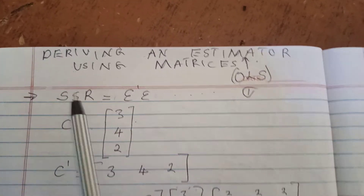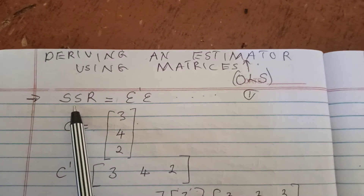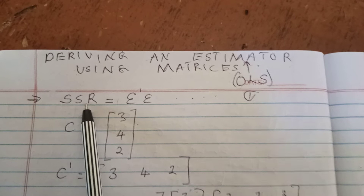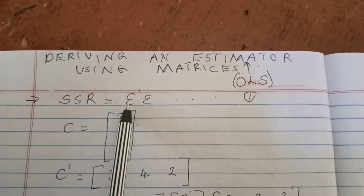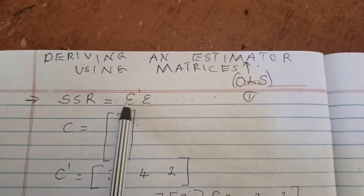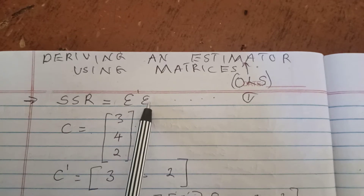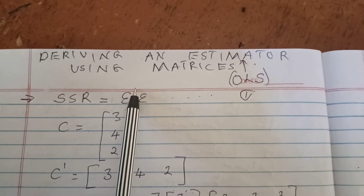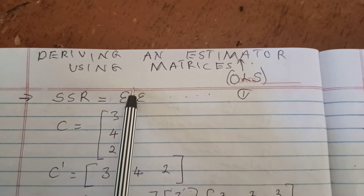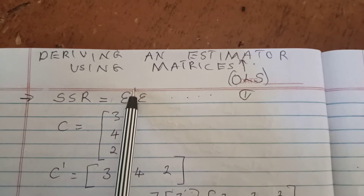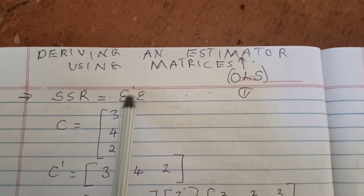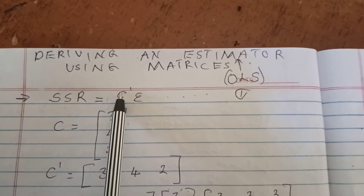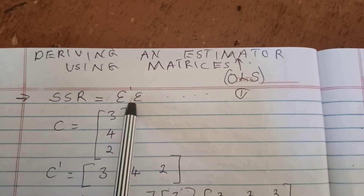The first thing you need is your SSR — SSR stands for Sum of Squared Residuals. This is equal to the transpose of epsilon multiplied by epsilon. Because we are working with matrices, when you see a term with a prime or T symbol, it denotes a transpose matrix. So the Sum of Squared Residuals equals epsilon-transpose multiplied by epsilon.